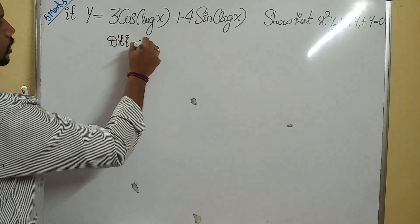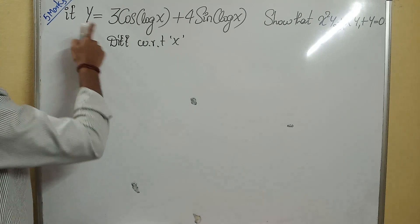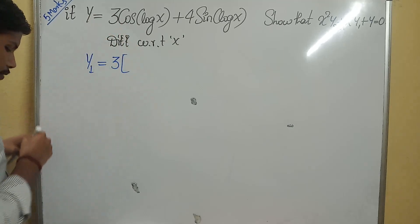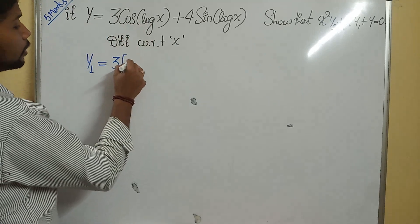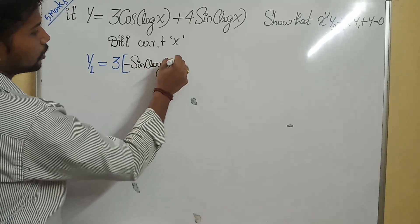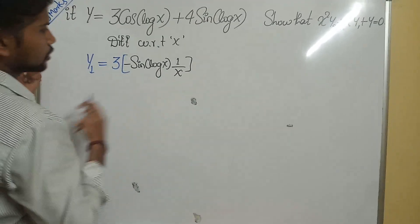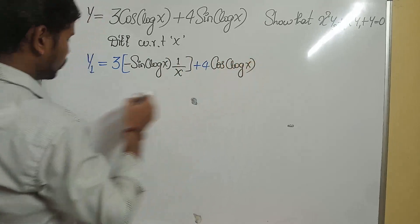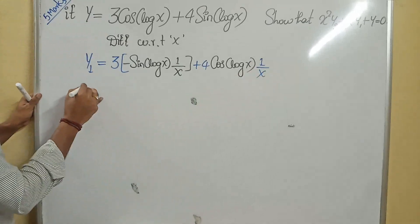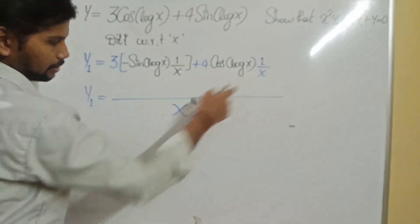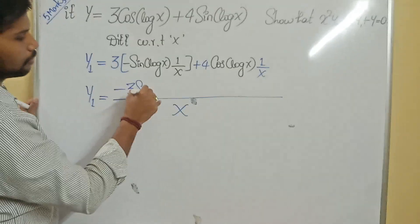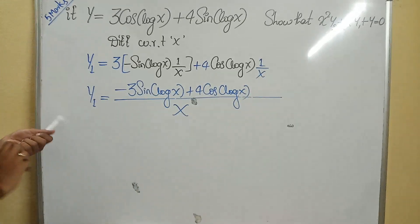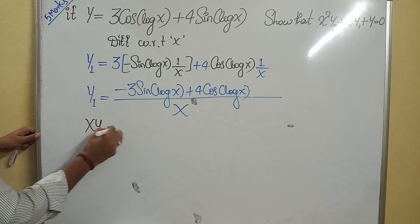Differentiating with respect to x: y₁ = 3 times the derivative of cos(log x), which is −sin(log x) times 1/x, plus 4 times the derivative of sin(log x), which is cos(log x) times 1/x. Taking the LCM as x, we get y₁ = [−3sin(log x) + 4cos(log x)] / x. Taking x to the left-hand side gives xy₁ = −3sin(log x) + 4cos(log x).